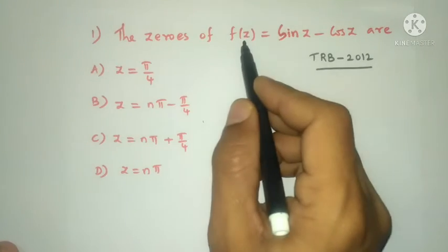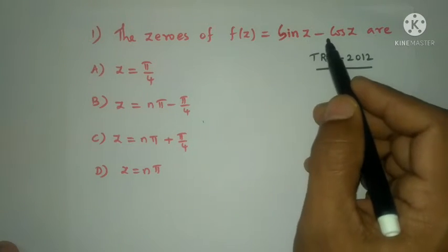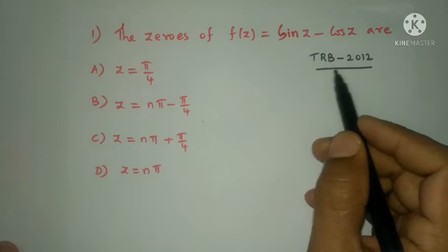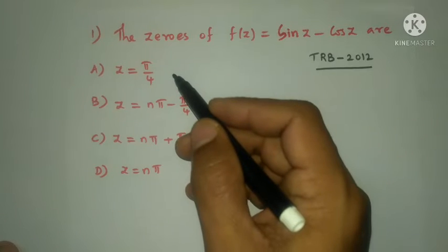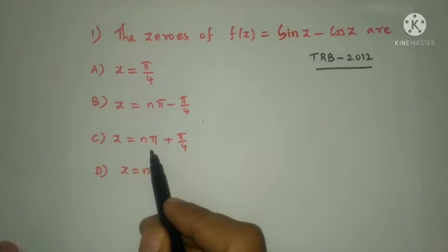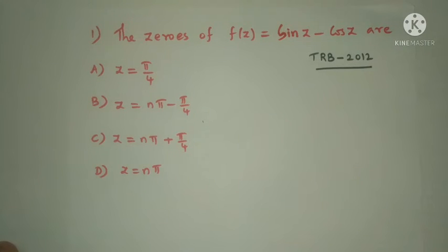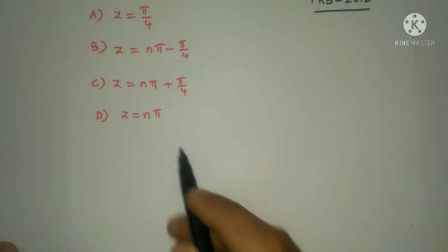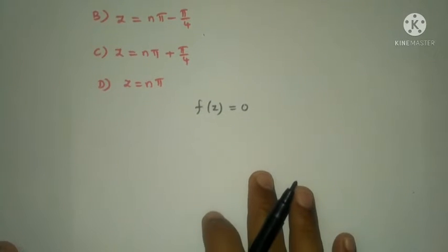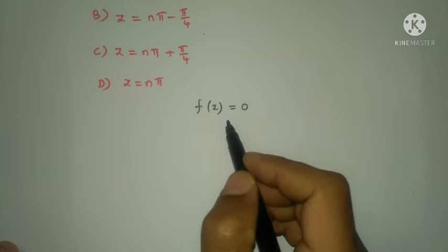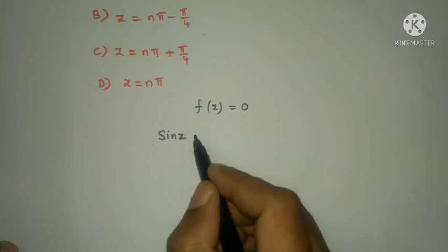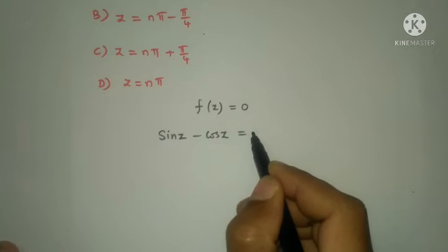First question: find the zeros of f(z) = sin z minus cos z. The zeros of f(z) would be where f(z) equals zero. So we set sin z minus cos z equal to zero.